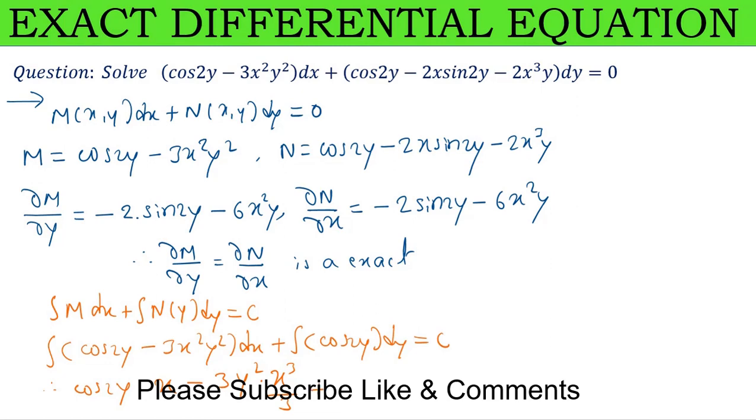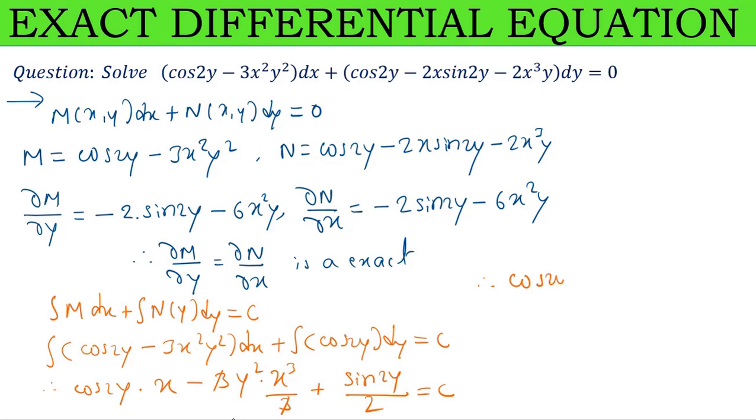Plus, integrate cos 2y with respect to y. Integration of cos gives sin 2y divided by 2. The 3 cancels.